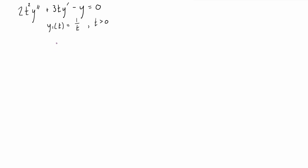To get started, we're going to write y2(t) — dropping the t notation to keep things cleaner. We're saying there's another solution y2 equal to some function v(t) times y1(t). We don't know v(t) yet, but we know y1(t). So we rewrite y2 as v times y1, and since y1 is 1/t, that gives us v/t, or equivalently v times t to the minus one.